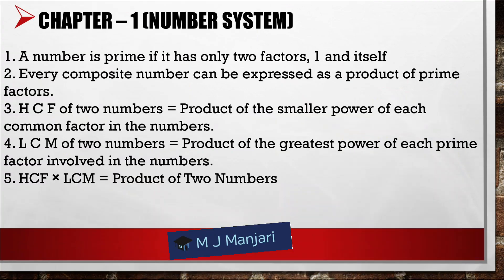Chapter 1: Number System. A number is prime if it has only two factors — one and itself. Every composite number can be expressed as a product of prime factors. HCF: The HCF of two numbers is equal to the product of the smaller power of each common factor in the numbers. LCM: The LCM of two numbers is equal to the product of the greatest power of each prime factor involved in the numbers. HCF multiplied with LCM is always equal to the product of the two numbers.